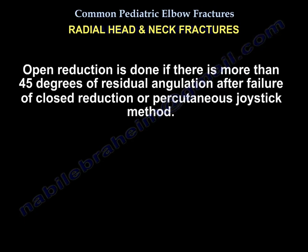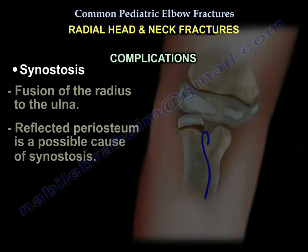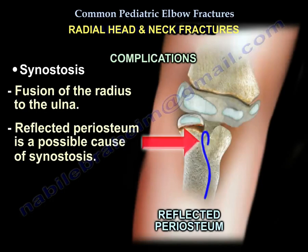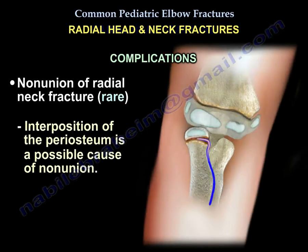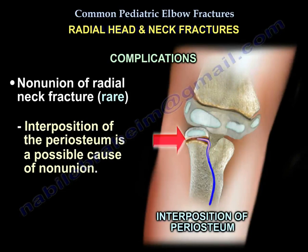Open reduction is performed if there is more than 45 degrees of residual angulation after failure of closed reduction or the percutaneous joystick method. Complications of open reduction include synostosis — fusion of the radius to the ulna — where the reflected periosteum is a possible cause. Other complications include osteonecrosis due to interruption of blood supply to the radial head, and loss of elbow motion. Non-union of the radial neck fracture is rare; interposition of the periosteum is a possible cause.